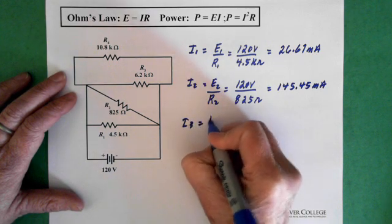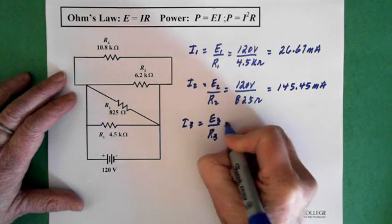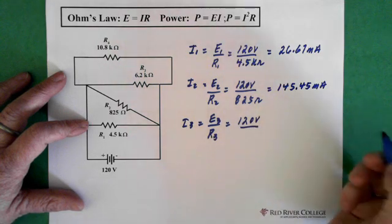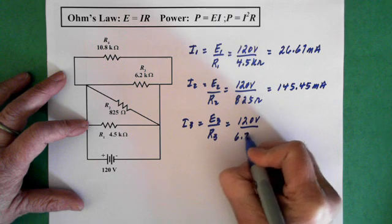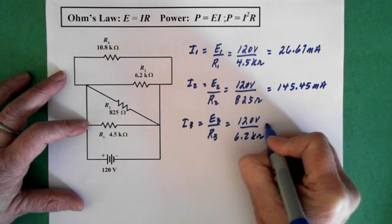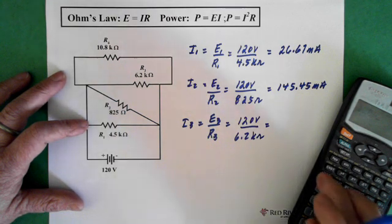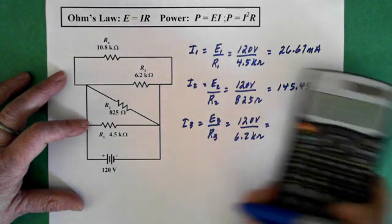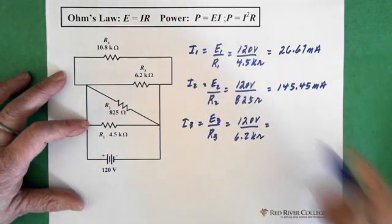I3 equals E3 over R3. Again our voltage is 120 volts, and that is over our 6.2 kilohms. 120 divided by 6.2 exponent 3 equals 19.35 milliamps.